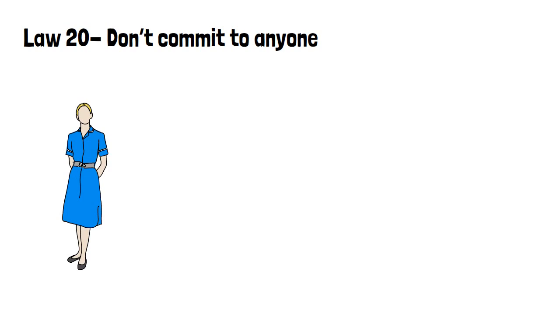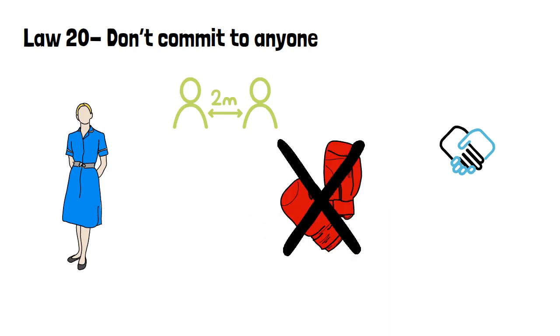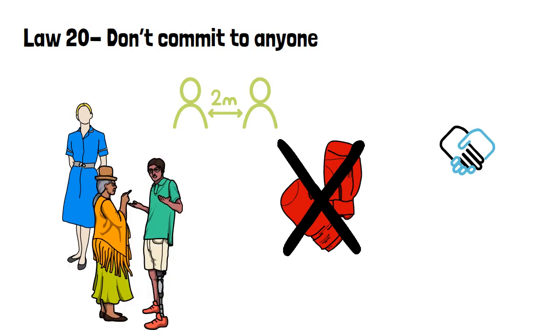Law 20, don't commit to anyone. The only cause you should commit to is yourself. Maintain your independence at all costs. This can help you to play people off against each other. When you hold back from joining a cause, you create a sense of respect because you appear untouchable. Also, stay out of small fights and squabbles. Pretend to be interested but let others do the fighting while you watch and wait. It is usually a good tactic to stir up quarrels between two parties and then gain power by acting as the go-between.